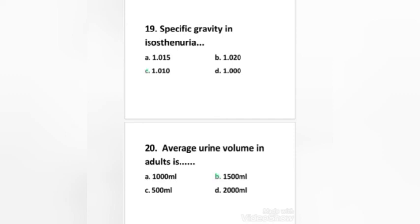Average urine volume in an adult is: 1000 ml, 1500 ml, 500 ml, or 2000 ml. Right answer is option B — average urine volume in an adult is 1500 ml.